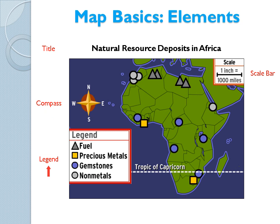If we look at these elements here, we can easily see that we are looking at a map of Africa, where a real inch on the map equals a thousand miles in real life. We can also look at the triangles to the north, and using the legend, we can quickly determine that there are fuel deposits clustered there. Map elements are the key to turning these images into an easily readable source of both quantitative and spatial information.